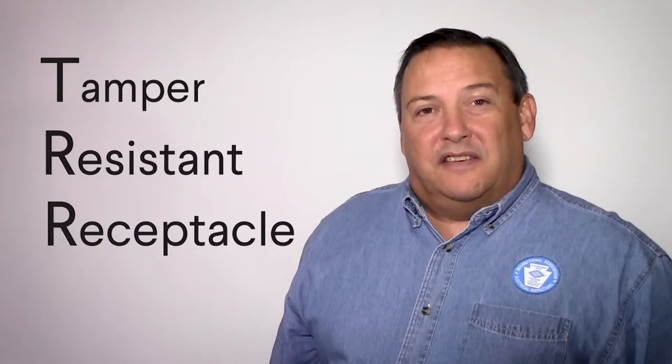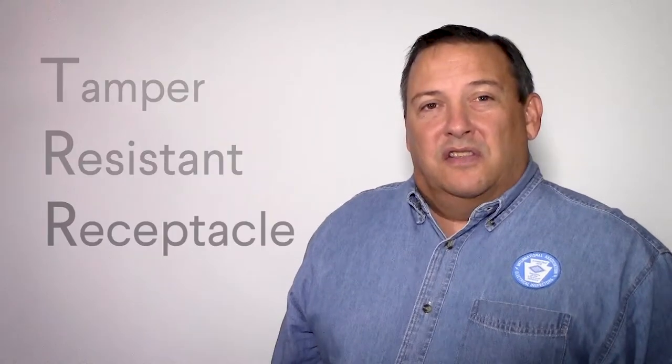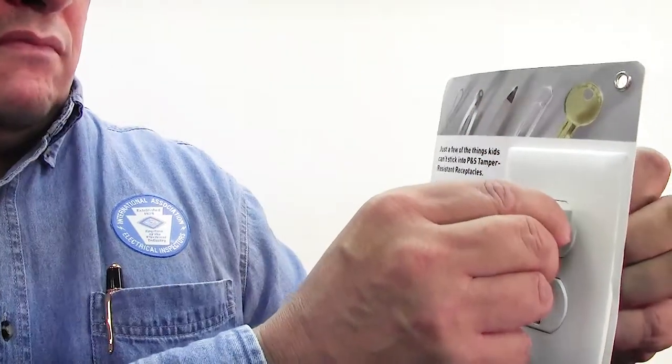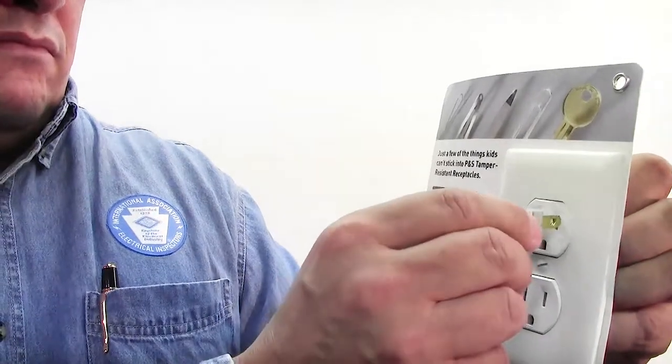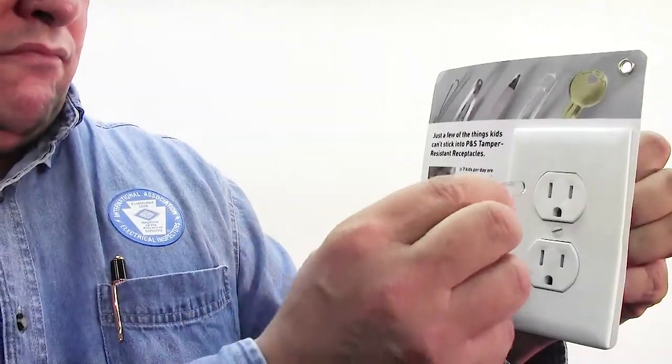However, a tamper-resistant receptacle can help protect against these occurrences. The shutters for these devices require positive pressure to be placed on both shutters before the plug can be inserted.